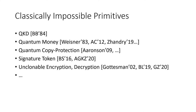The no-cloning principle opens the door to many classically impossible primitives. Examples include Quantum Key Distribution by Bennett and Brassard, Quantum Money first studied by Wiesner, Quantum Copy Protection first by Aaronson, Signature Token first by Ben David and Sattath, Unclonable Encryption by Gottesman, Broadbent, and Lord, and Unclonable Decryption by Georgiou and Zhandry.